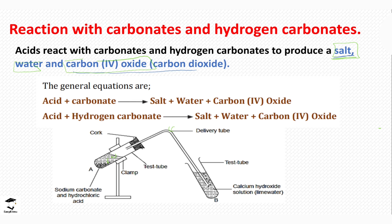The lime water helps to test the presence of carbon dioxide being produced. Lime water is also called calcium hydroxide. When the effervescence happens and the bubbles are directed to the lime water, after some time the lime water turns to a white precipitate. This is because carbon dioxide reacts with calcium hydroxide to form calcium carbonate, which is the white precipitate that makes the lime water turn white.